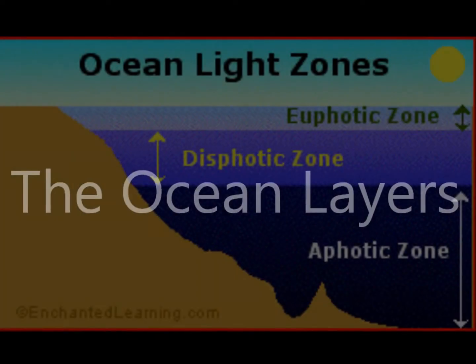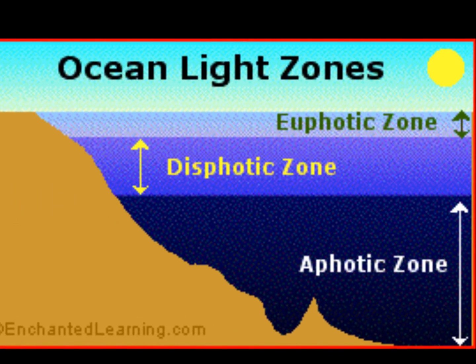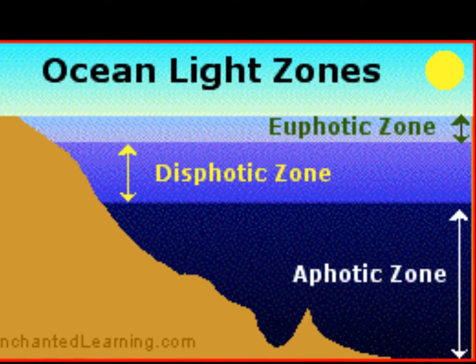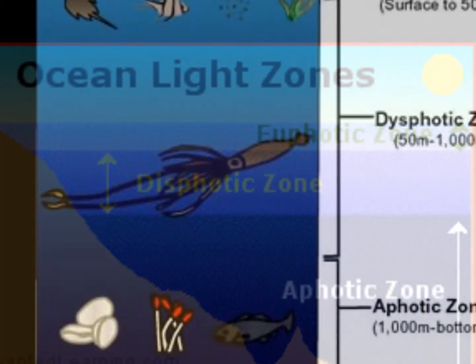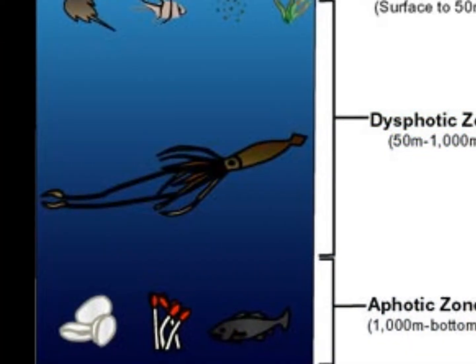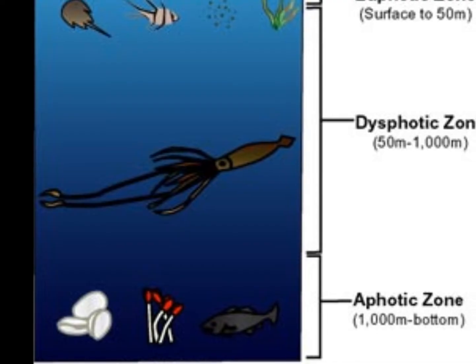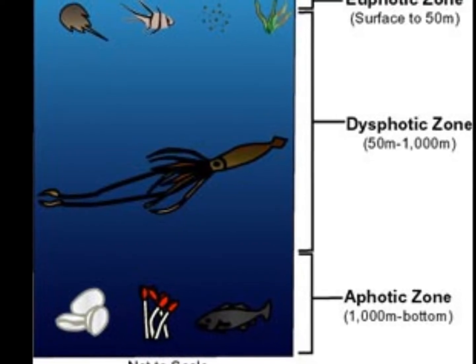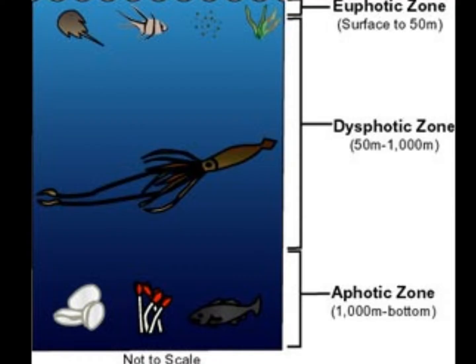The oceans are divided into three main layers: the euphotic zone, the dysphotic zone, and the aphotic zone. Each of these zones differ in their salinity, their temperature, light, and their plant and animal life.